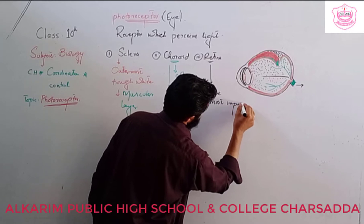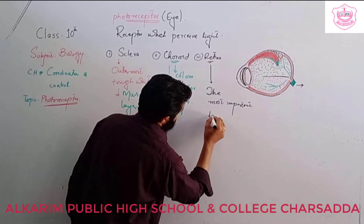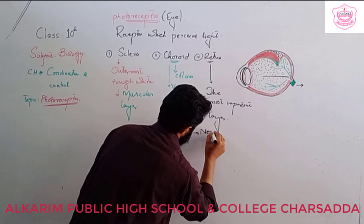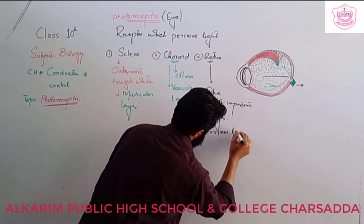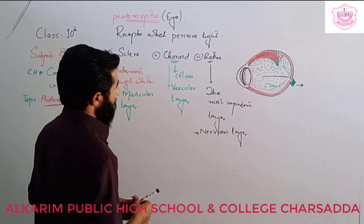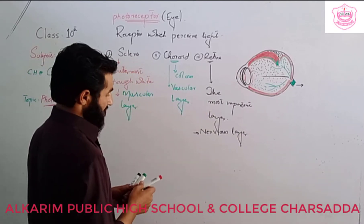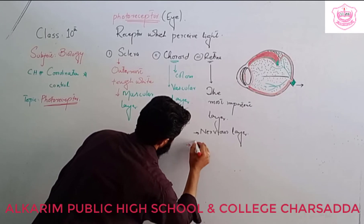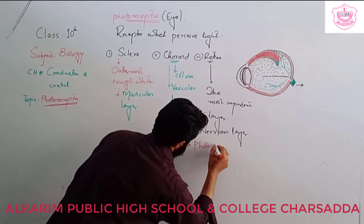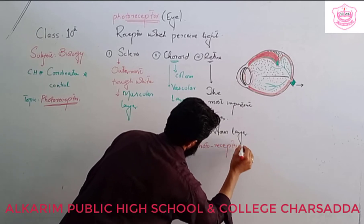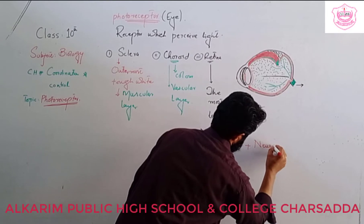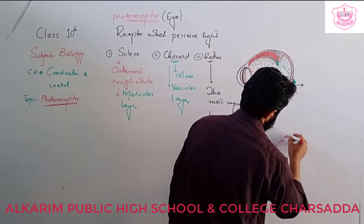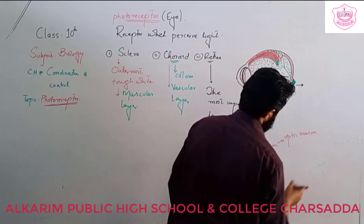The retina is the most important layer. It is known as the nervous layer. The retina contains photoreceptor cells and neurons. The type of neuron present here is known as the optic nerve, or optic neuron.